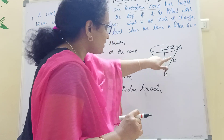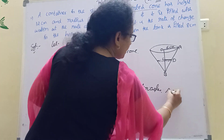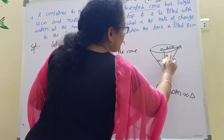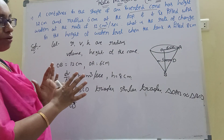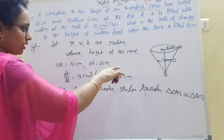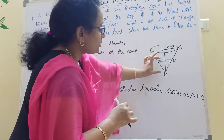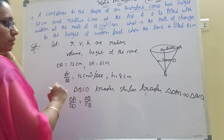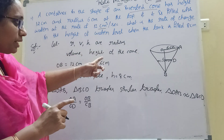Using similar triangles: triangle OAB is similar to triangle BCD. So OA by CD equals OB by CB. We need to verify this condition — OA by CD equals OB by CB.